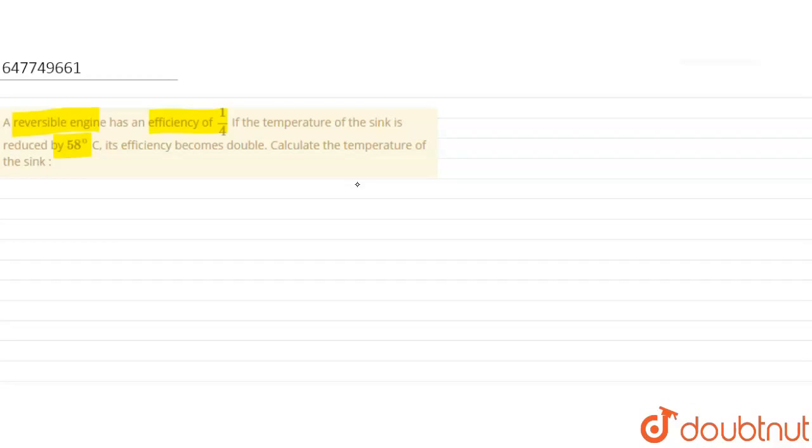Calculate the temperature of the sink. The initial efficiency of the engine is 1/4. Efficiency equals 1 minus the temperature of the sink upon the temperature of the reservoir. So efficiency equals 1 minus T₂/T₁, lower temperature upon higher temperature. This is equation number one.